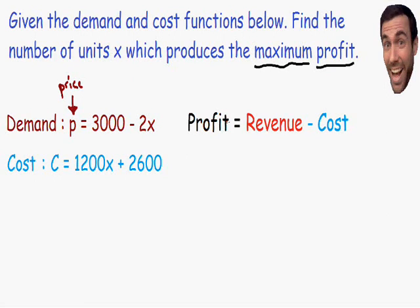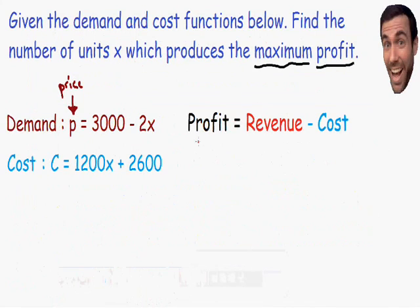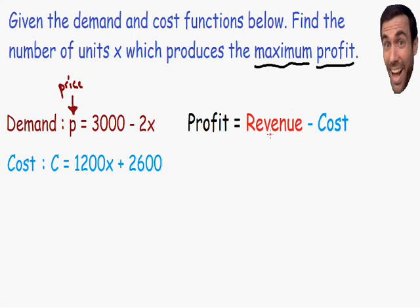This profit equation is what we are trying to maximize, and now we are ready to move on to step number 2. Step number 2 says to reduce this equation to one variable. We need to reduce this profit equation in terms of one variable. First, let's look at revenue — revenue is just the total amount of money you receive. If you have 10 units of a product and sell each for $5, 5 times 10 equals $50 in revenue.